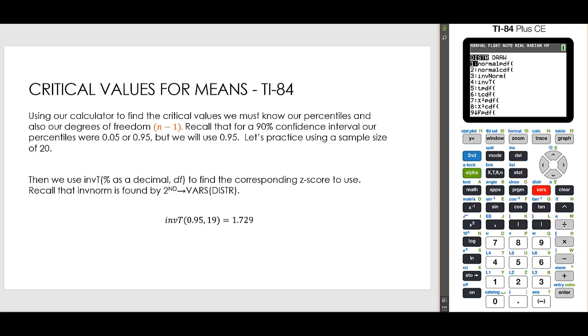Notice now, because this is not the normal model, this is our T model, which is what we use for means, I'm going to choose inverse T, and the area for a 90% interval, I have to put in 0.95.